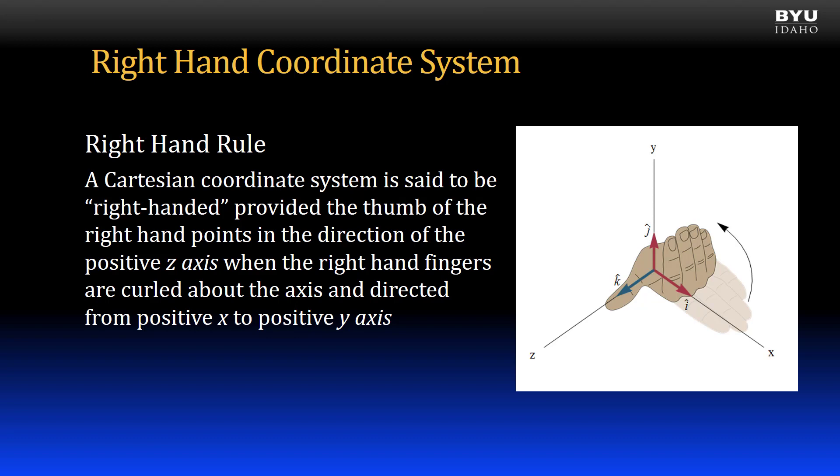A Cartesian coordinate system is said to be right-handed, provided the thumb of the right hand points in the direction of the positive z-axis, when the right-hand fingers are curled about the axis and directed from the positive x to the positive y axis.